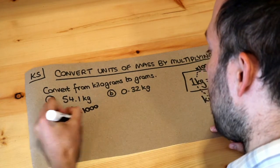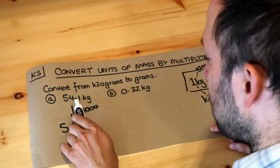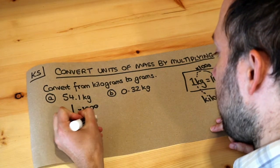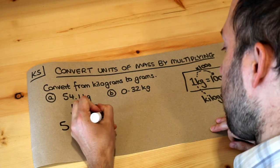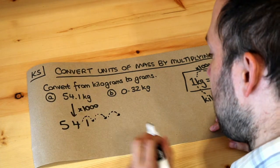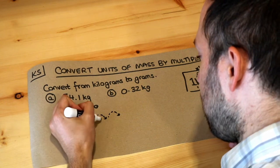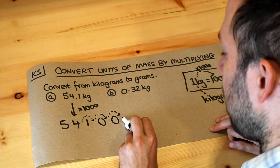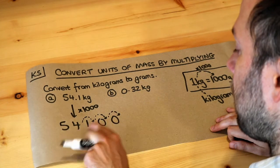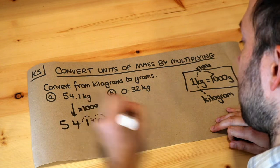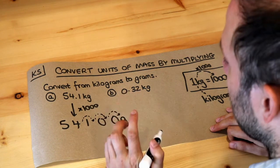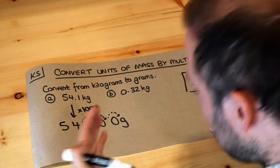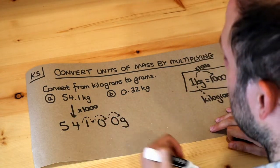If we put the digits 5, 4, 1 and place our pen just between the four and the one, the decimal point is currently there. The decimal point moves one, two, three places to the right, and we need to put some extra zeros in. So we get a zero and another zero, and the decimal point is just after that zero. The answer is 54,100 grams. A quick way to think about it: if one kilogram is a thousand grams, then 54 kilograms would be 54,000 grams.